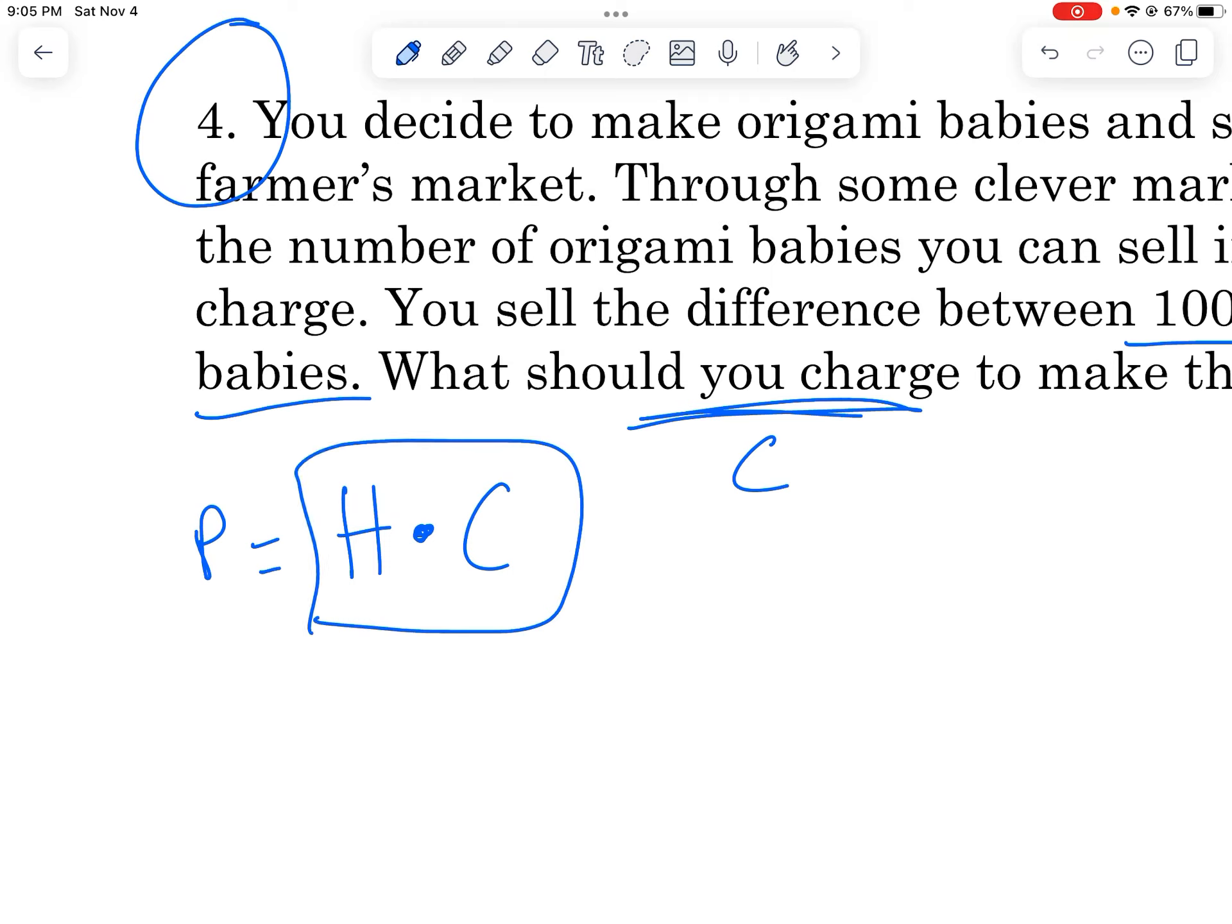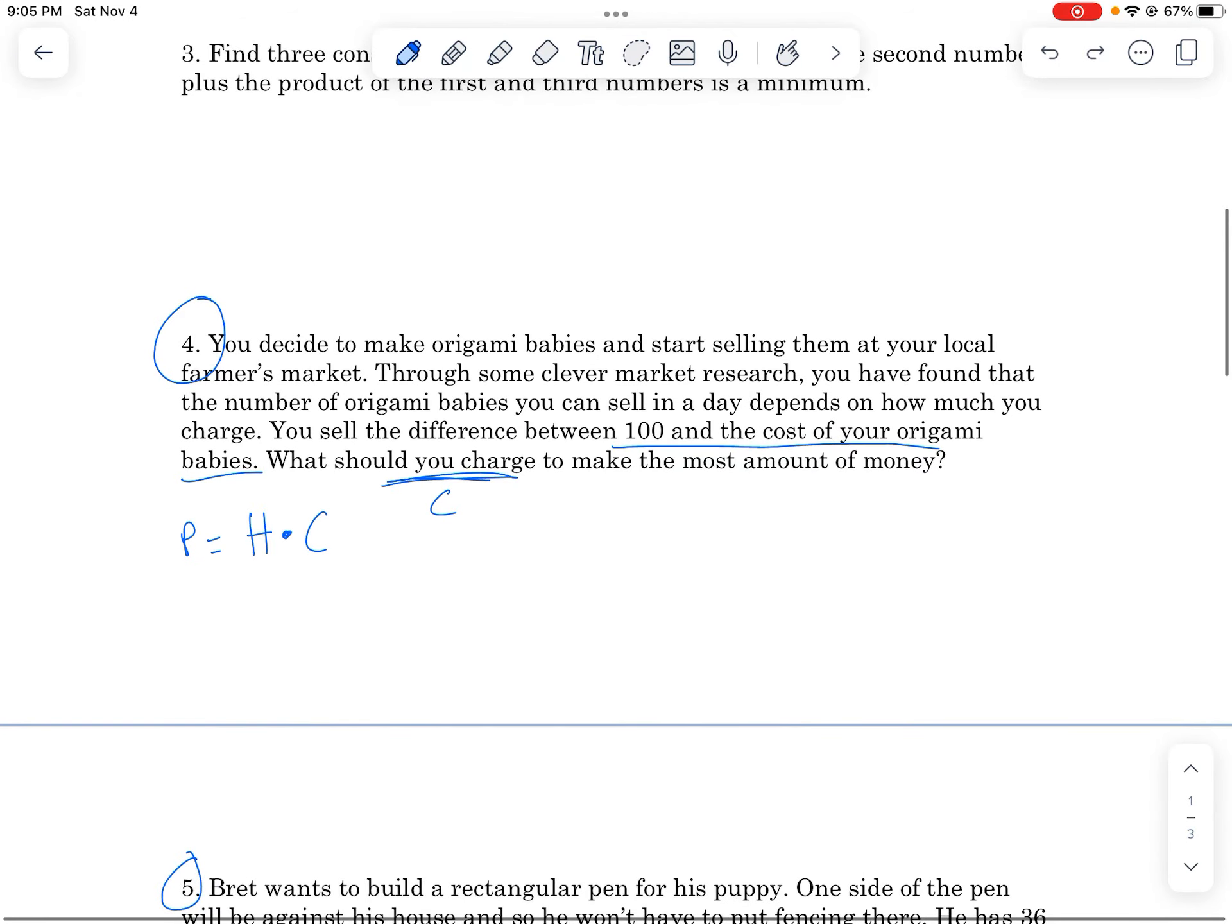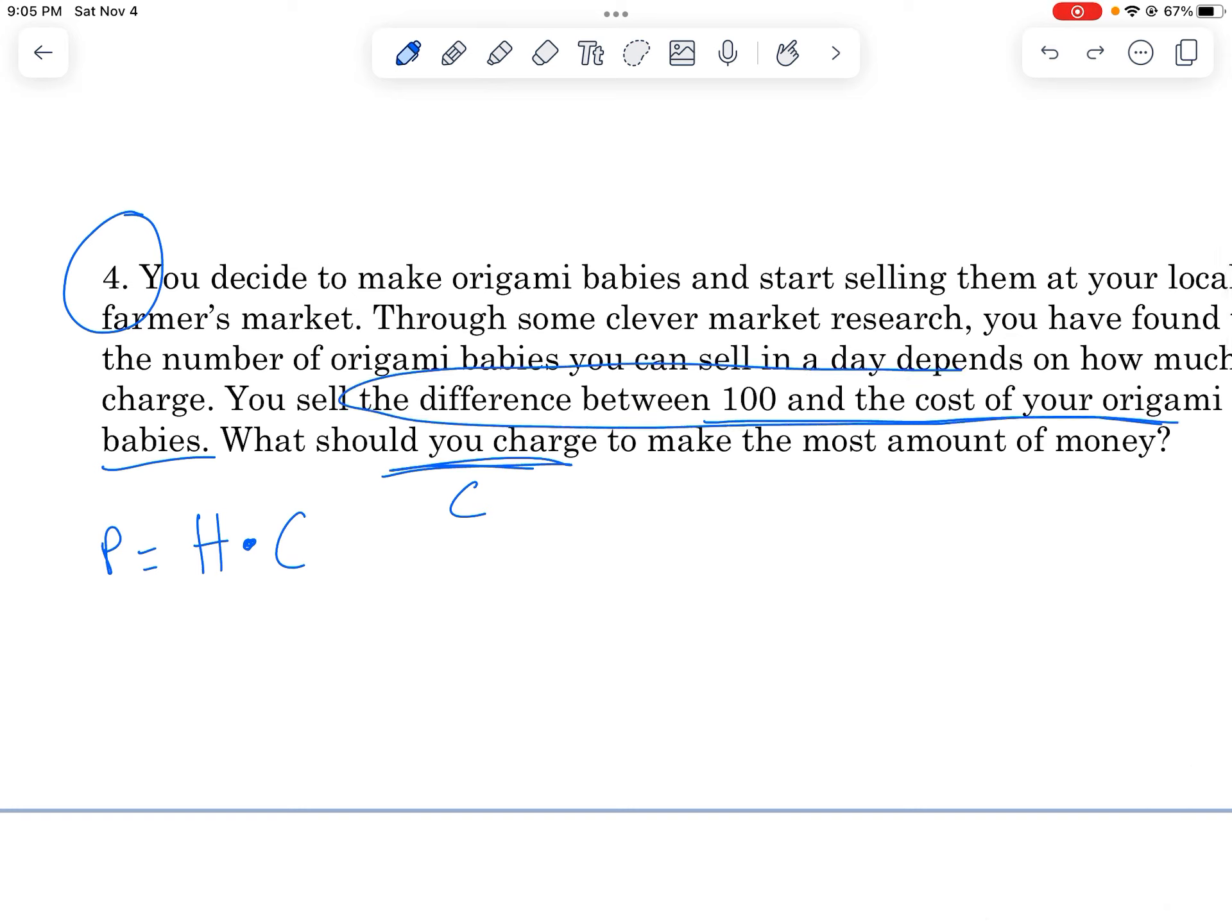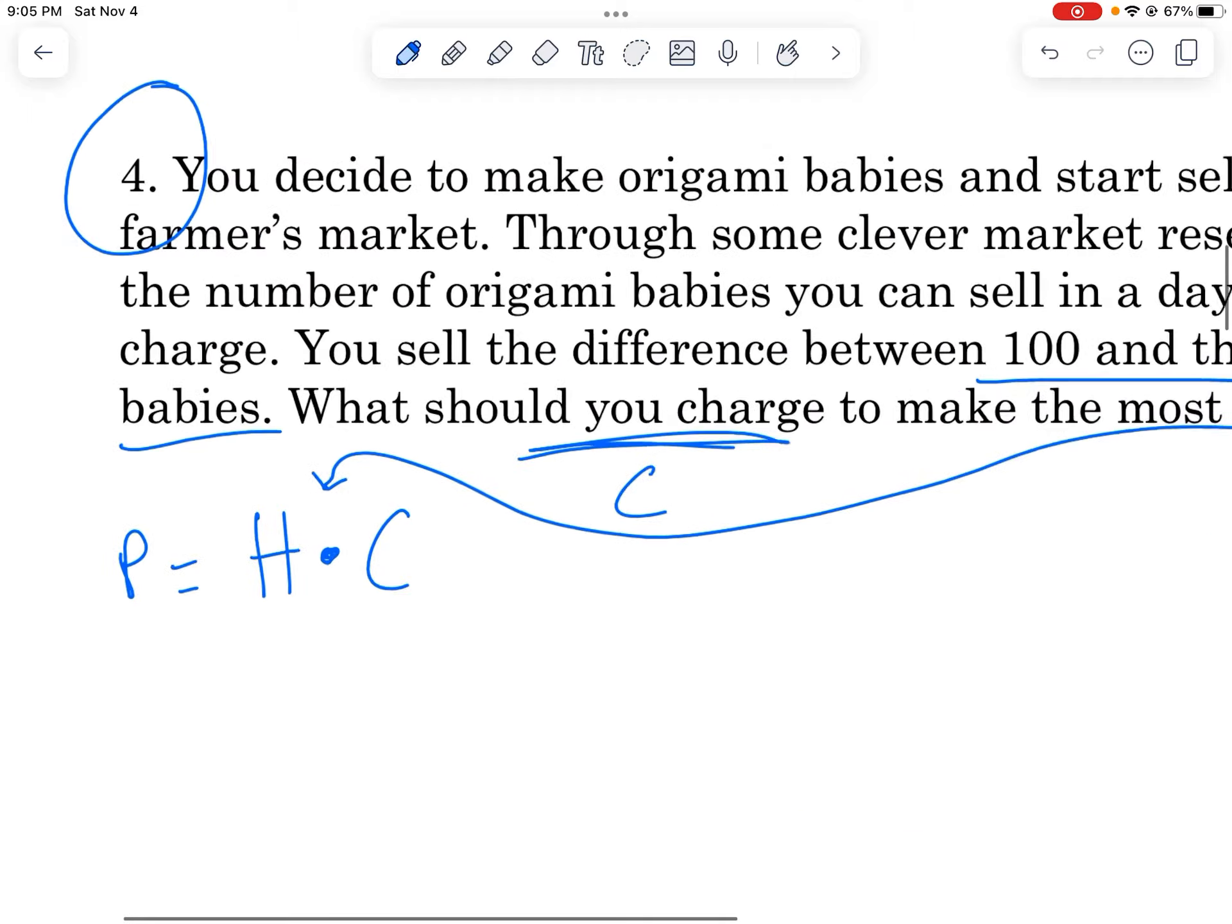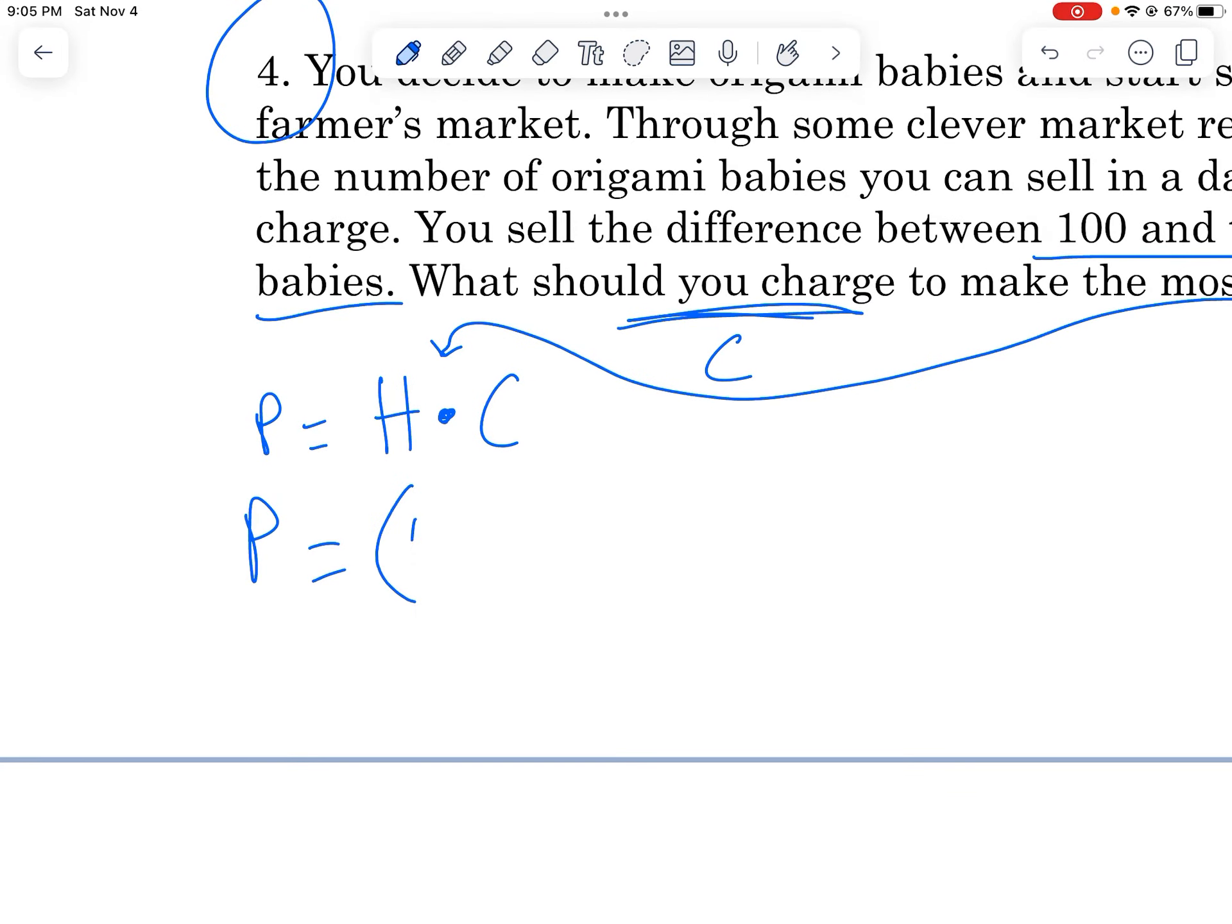Well, the problem with this is this has two different variables. And we're not going to be able to get the maximum if we have two different variables here. There's actually infinitely many answers here. But luckily, we have another constraint here. You sell the difference between 100 and the cost of your origami babies. And so we're going to take that and turn it into an expression. How many we sell is the difference between 100 and how much we charge for them, the cost of the babies. So we get a little expression that looks like this, 100 minus C. So we're going to take this and put it in the H spot.